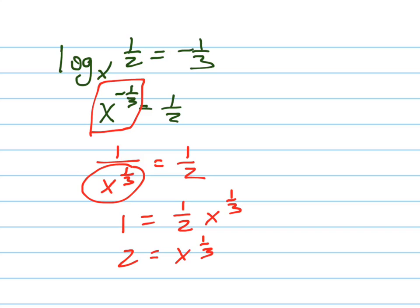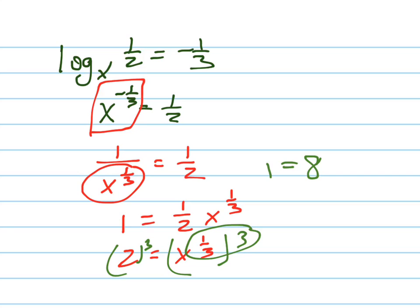And now cube both sides to get rid of the one-third, because one-third times three is just one. So x equals eight.